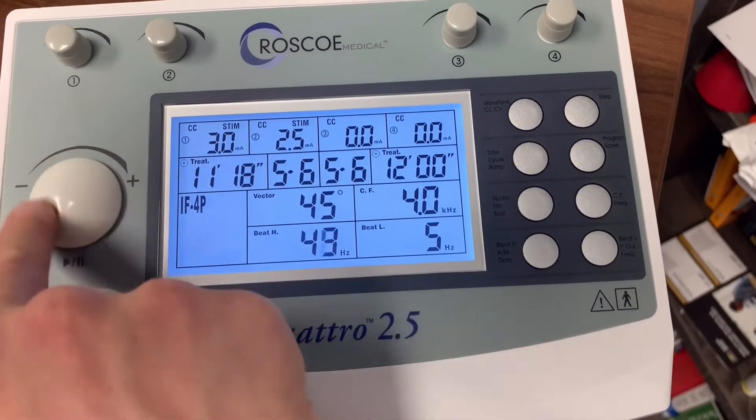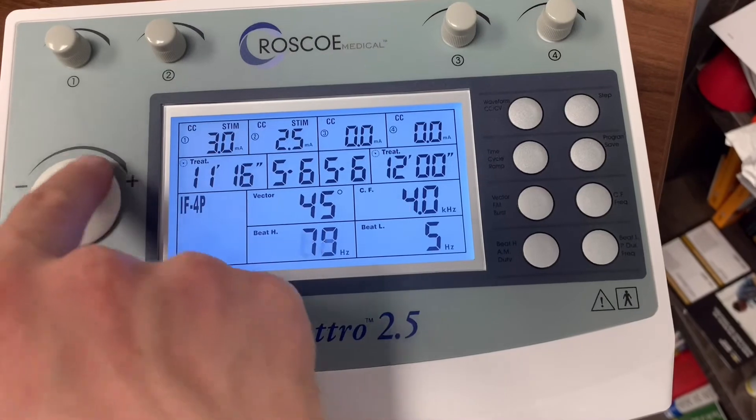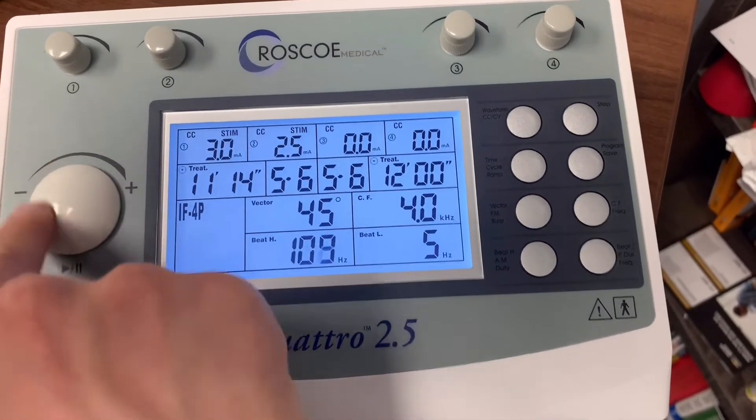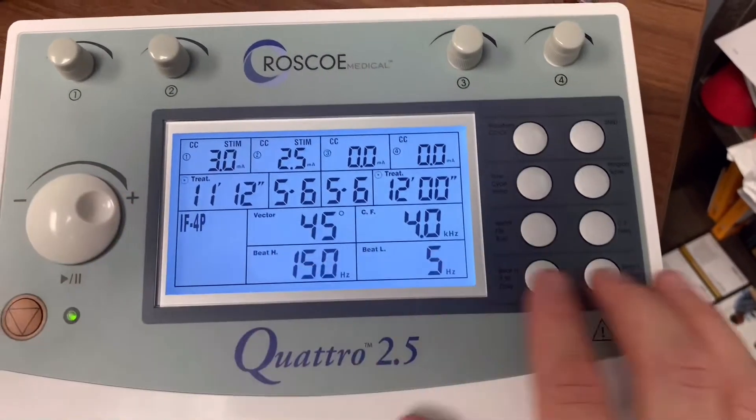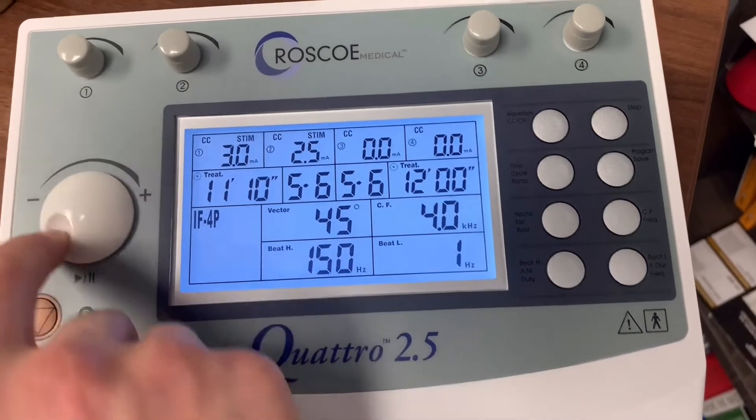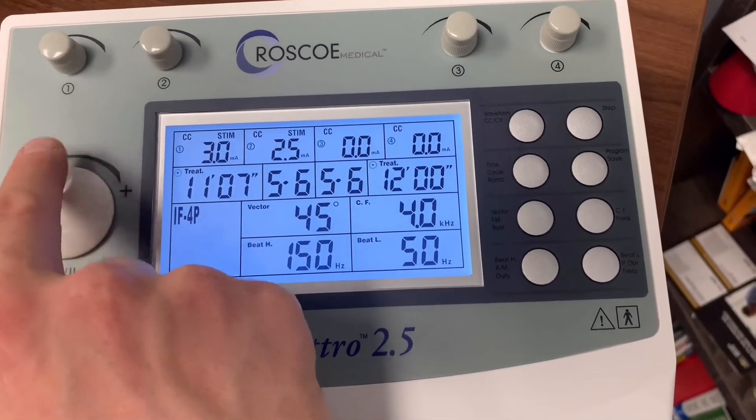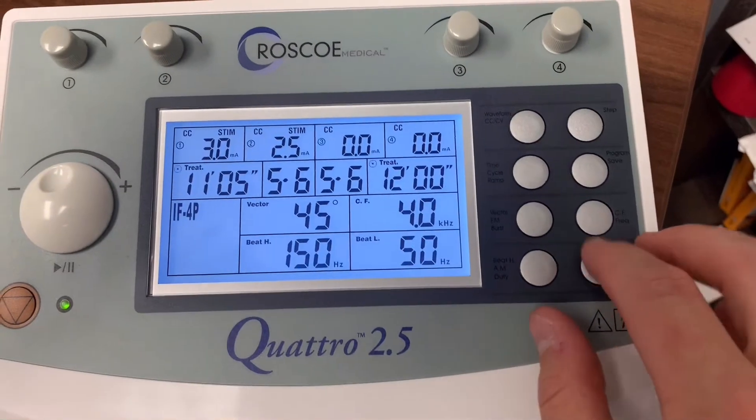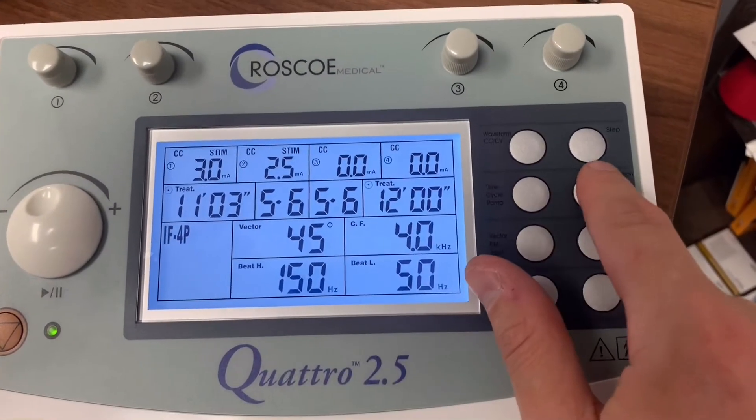we want to change that to, we had the first one was 50 to 150 below. So we've got 50, 50, okay, so we're going to save that. So 50 to 150, we're going to hit step.